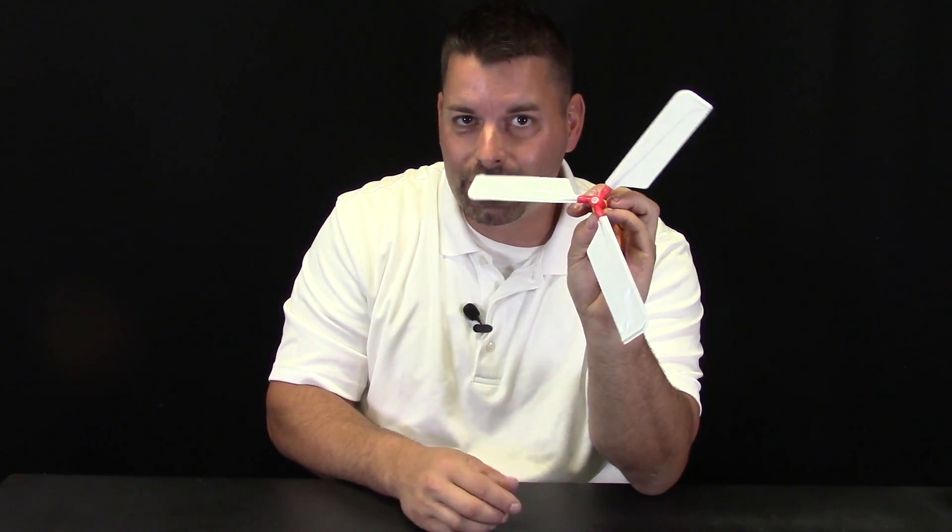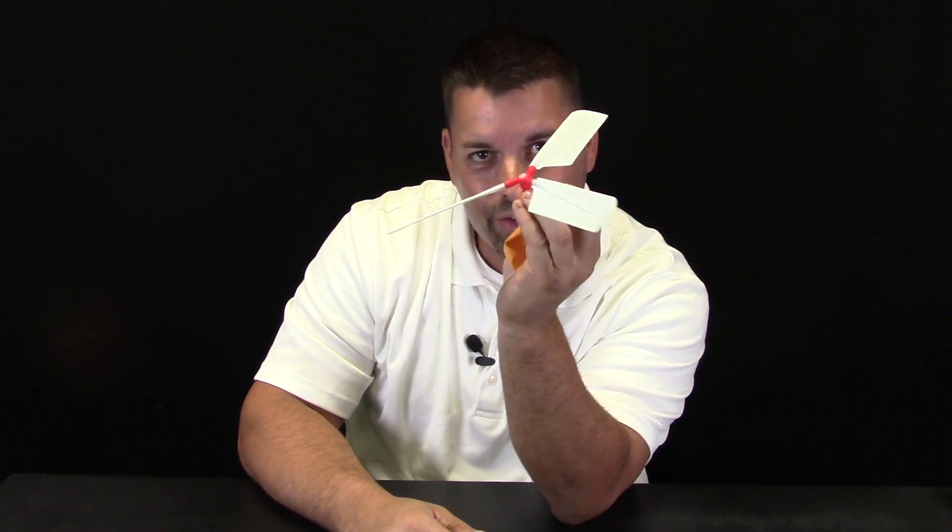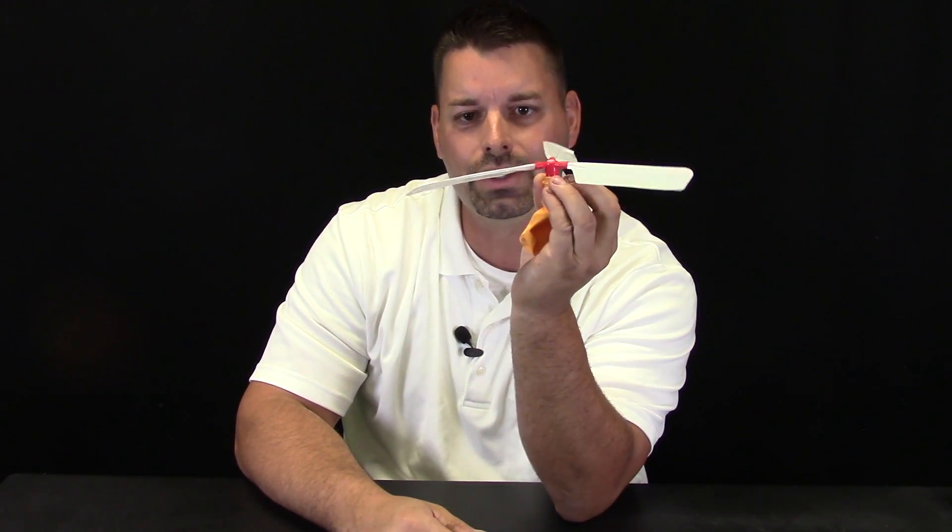Now when those wings spin it allows air to flow over the top of these wings. And these wings are made a certain way. What do you notice about these wings? Well they are slanted. And that slant is necessary. Why? Well take a look at this.